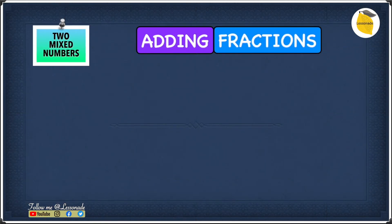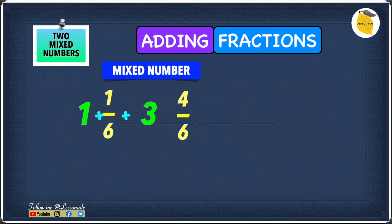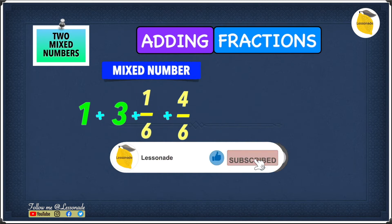Now let's have a look at adding two mixing numbers. The example we have is 1 1 over 6 plus 3 4 over 6. We can write these mixing numbers as 1 plus 1 over 6 and 3 plus 4 over 6. But if you notice, when writing two mixing numbers like this it looks a bit more confusing, so we can swap the 3 and the 1 over 6 to make it easier.